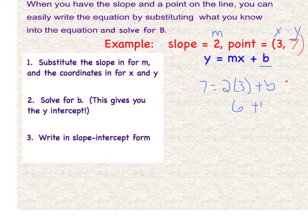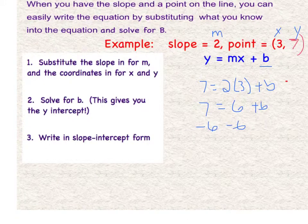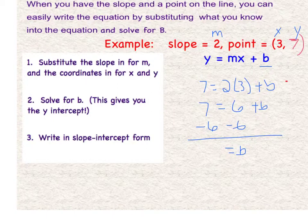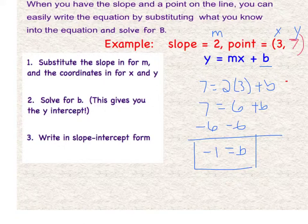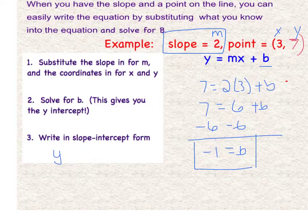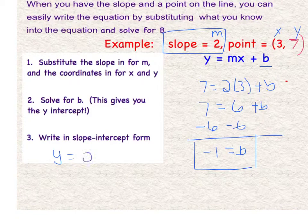So 7 equals 2 times 3 plus b. So that's 6 plus b equals 7, minus 6 minus 6, so b is negative 1. So now I have my y-intercept, and I had already been given the slope. So slope-intercept form would be y equals 2x minus 1.